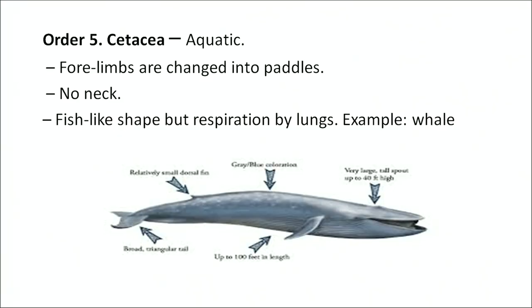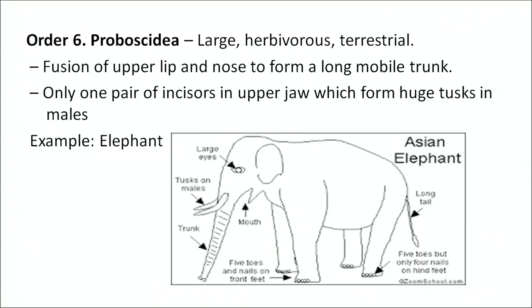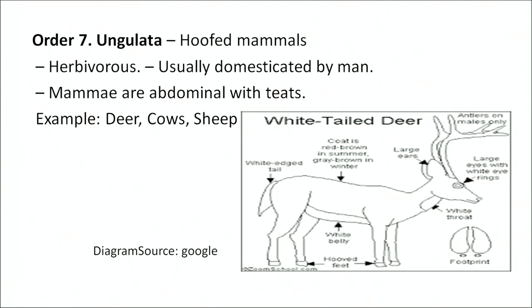Order Cetacea: aquatic animals — forelimbs changed into paddles; no neck; fish-like shape but respiration by lungs. Example: whale. Order Proboscidea: large herbivorous terrestrial animals. The upper lip and nose are fused to form a long, mobile trunk. Only one pair of incisors in the upper jaw forms huge tusks in males. Example: elephant. Order Ungulata: hoofed mammals, herbivores, usually domesticated by man. They have mammae and are terrestrial with teeth. Examples: deer, cow, sheep.